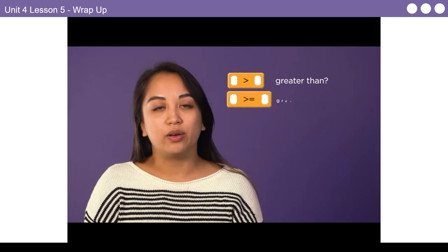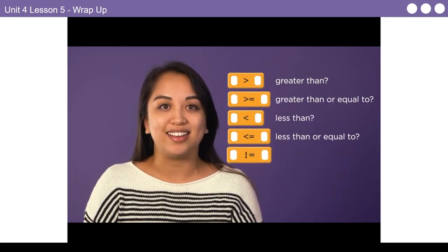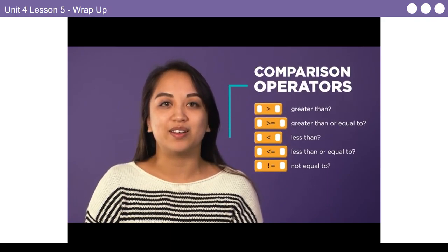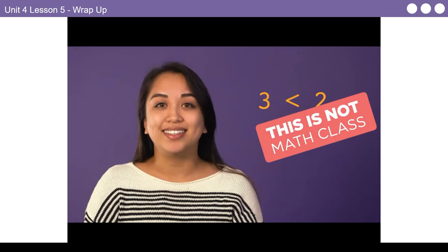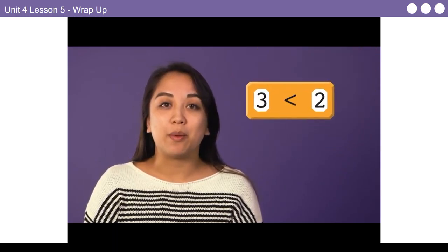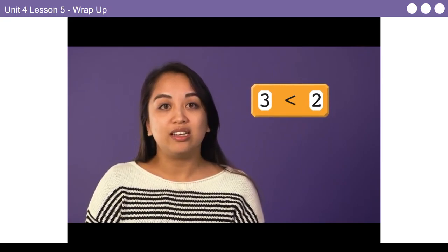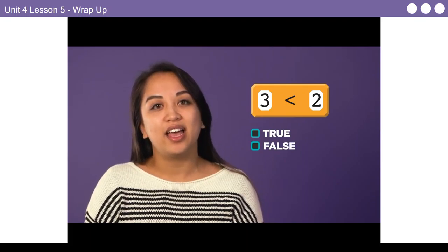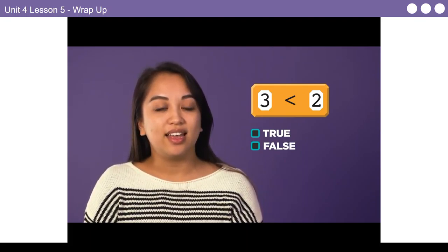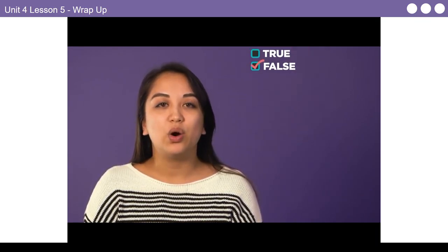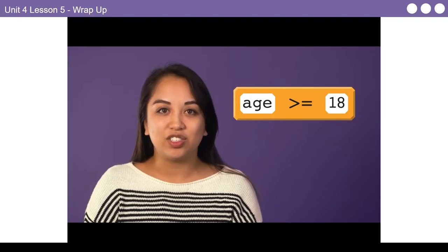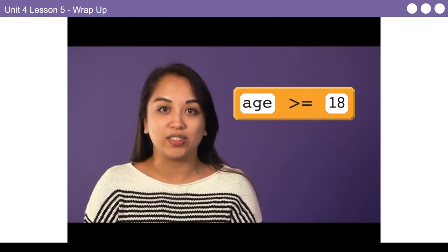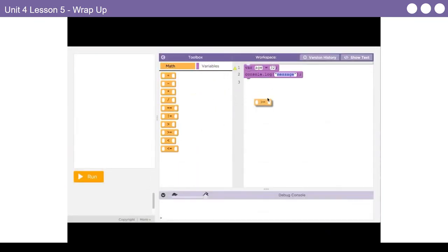In addition to the equality operator, we can ask questions about if one value is greater than or less than another value — these are called comparison operators. In programming, you use comparison operators to ask the computer a question, which it can answer true or false. So with the statement 'Is 3 less than 2?', the answer is false. We can use a comparison operator in our voter registration example to make the program more accurate, because it's not just 18-year-olds who can vote — it's anyone whose age is 18 or older. So the question should be: Is the user's age greater than or equal to 18?